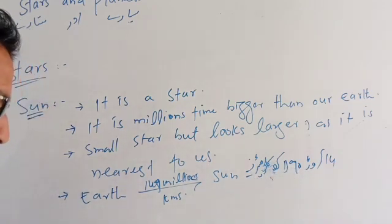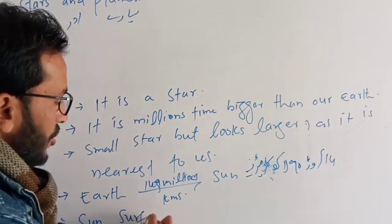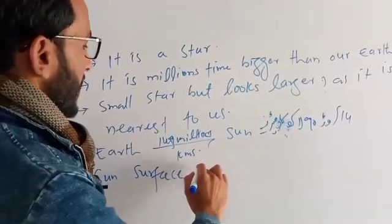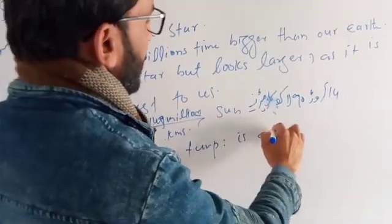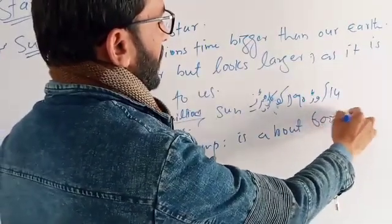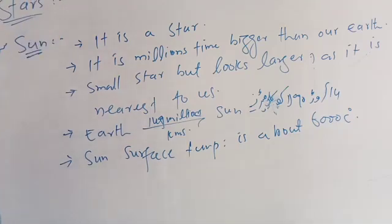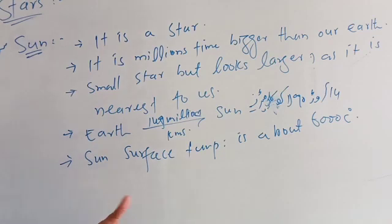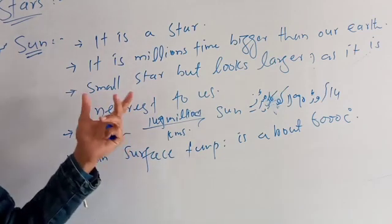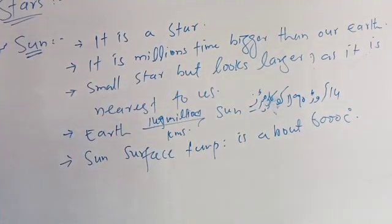The sun's surface temperature is about 6000 degrees centigrade. It is a small star but it looks larger because it is nearest to us.